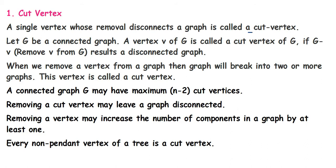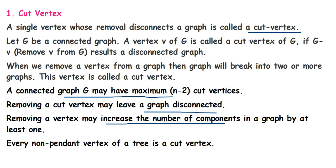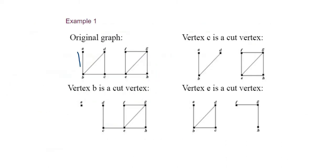Next, let's see what is a cut vertex. A cut vertex is a single vertex whose removal disconnects a graph. Let G be a connected graph; a vertex V of G is called a cut vertex if removing V from G results in a disconnected graph. When we remove a vertex from a graph, the graph will break into two or more subgraphs — this vertex is called a cut vertex. A connected graph may have a maximum of N minus two cut vertices. Removing a cut vertex may leave a graph disconnected, and every non-pendant vertex of a tree is a cut vertex.